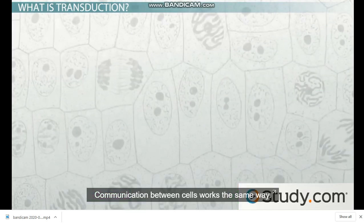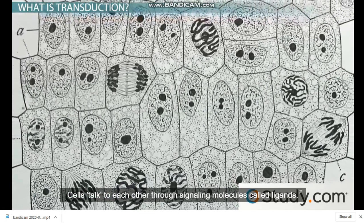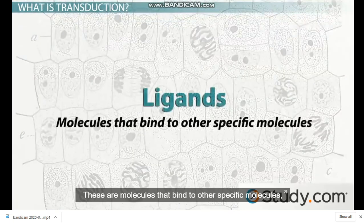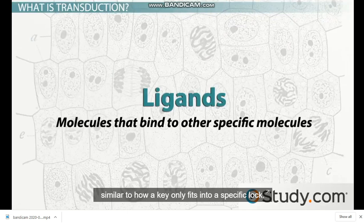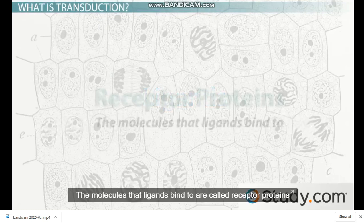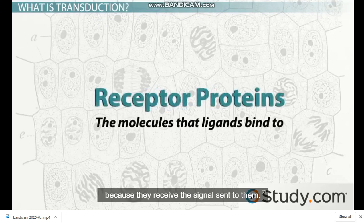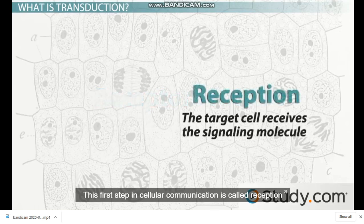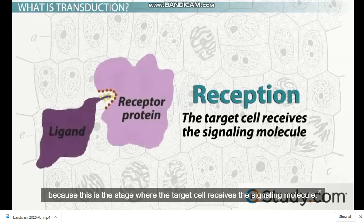Communication between cells works the same way. Cells talk to each other through signaling molecules called ligands. These are molecules that bind to other specific molecules, similar to how a key only fits into a specific lock. The molecules that ligands bind to are called receptor proteins because they receive the signal sent to them. This first step in cellular communication is called reception, because this is the stage where the target cell receives the signaling molecule.